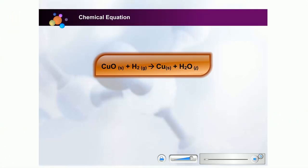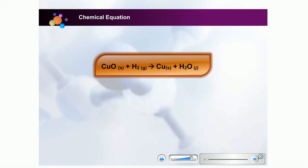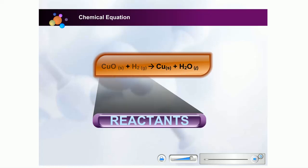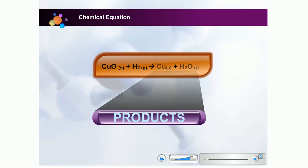Take a look at this chemical equation. It shows the state of substances before and after the reaction. The substances before the reaction are called reactants. The substances produced after the reactions are called products. Copper oxide and hydrogen gas are the reactants. Copper and water are the products.